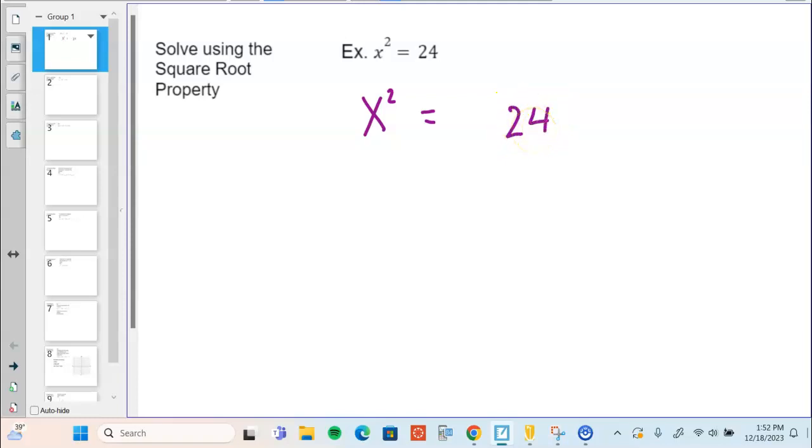We need to do the square root to undo a square. Whatever we do to one side of the equation, we do the same to the other. Then we need to remember there's a positive square root and there is a negative square root.